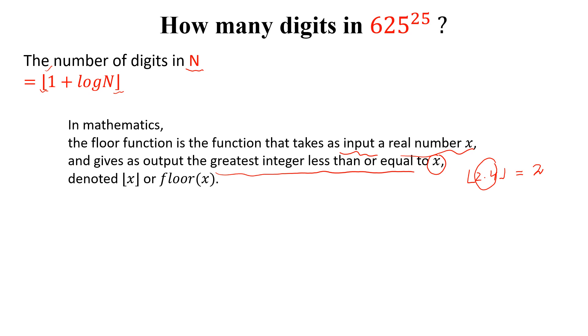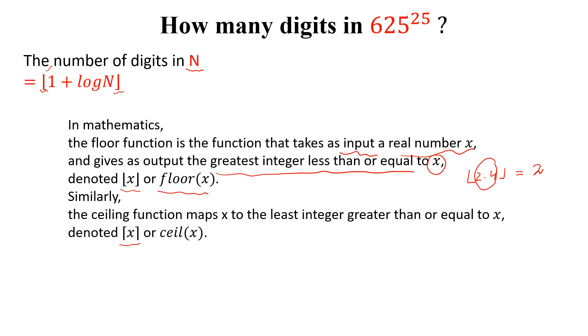And this is denoted by this or floor of x. Similarly, the ceiling function makes x to the least integer greater than or equal to x. And this is denoted by this or ceiling of x. For example, floor function of 2.4 is 2 and ceiling function of 2.4 is 3. So we will use this floor function in this definition.